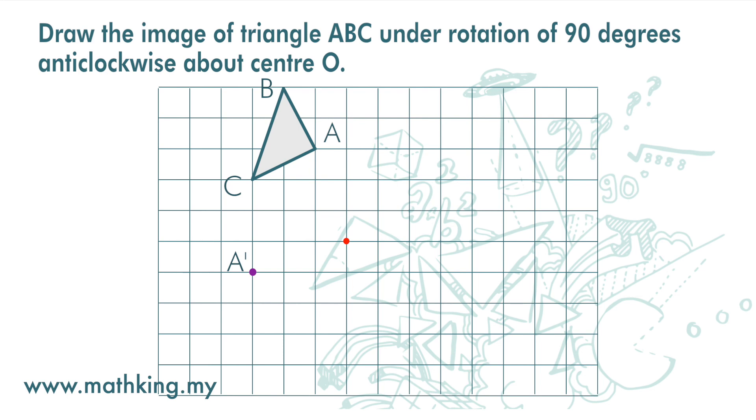Let's draw a rectangle for point B. From O, it is 1, 2, 3, 4, 5. And 1, 2.